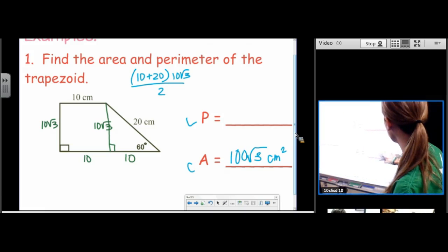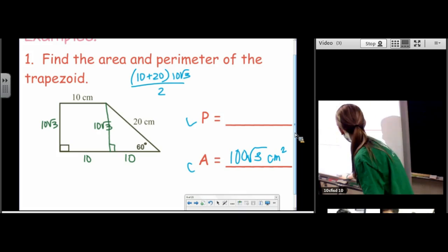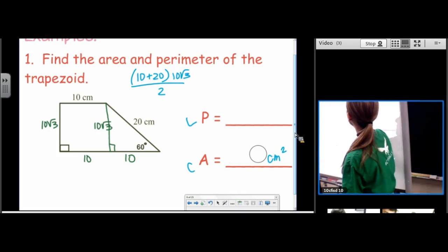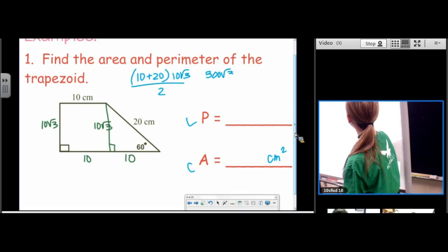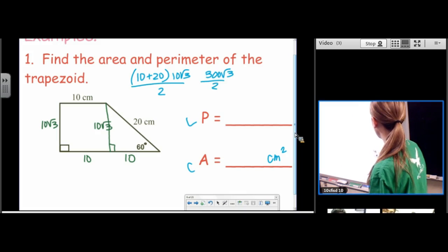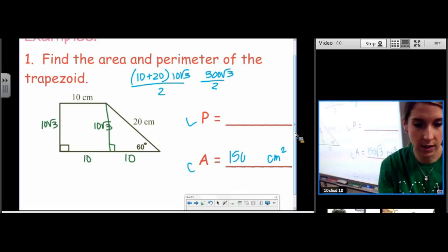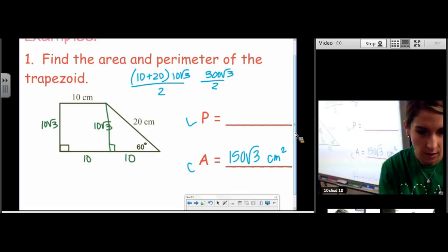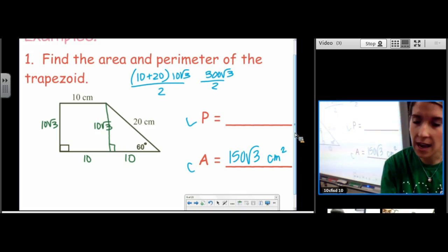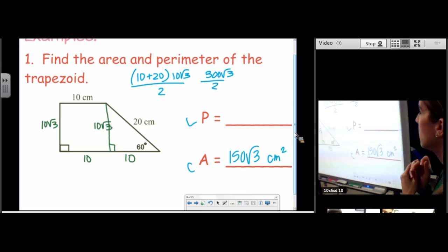So this would be 300 root 3 over 2. So that would be 150 root 3. And it looks like, what did you get for the perimeter? Let me scroll back up. 50 plus 10 root 3. Let's see. 10, 20, 30, 40, 50. Yep.